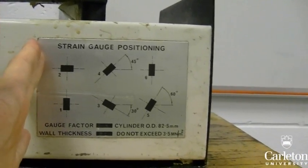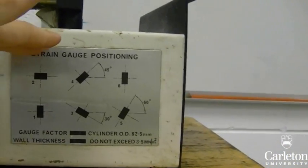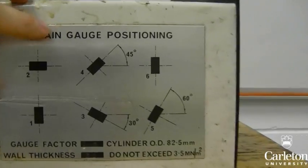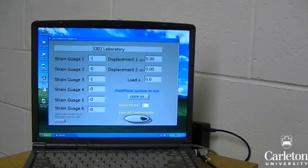Gauges 1 and 6 will record the circumferential strain, while gauge 2 will record longitudinal strain. Zero the gauges like this.